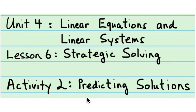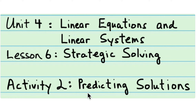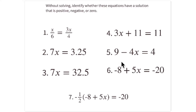This is Activity 2: Predicting Solutions from Lesson 6, which is Strategic Solving. The goal of this activity is practice on predicting what the solution is going to be — whether it's going to be positive, negative, or zero. You're looking at each equation and without solving, making a prediction.